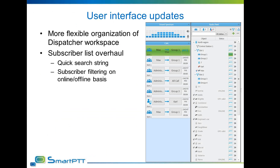The subscriber list was redesigned. Online and offline subscribers are now shown in one list with filtering instead of two separate lists. Dispatchers will see online subscribers in a tree-like structure under each slot or control station. Offline subscribers are shown in grey at the bottom of the list. A quick search option is added so dispatchers can find a radio, control station, or channel by typing its name or ID. A status filter is also available to show only subscribers with a specific status. Buttons at the top can toggle display of groups, online subscribers, and offline subscribers.